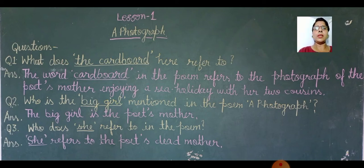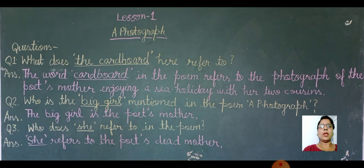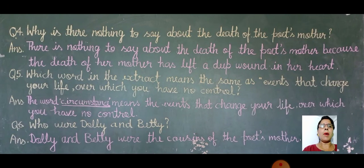Who does 'she' refer to in the poem? She refers to the poet's dead mother. This is the kavi's — that is, the poet's — mother.